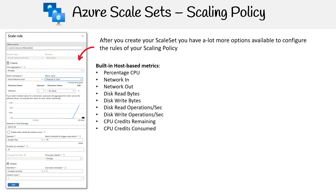You have the option to choose one of the built-in host metrics already being collected on your virtual machine. The most popular ones include CPU, networking, network out, disk, and write. Then you have your aggregates, so you can decide how you want to group or collect that data before you apply your final operations on it.